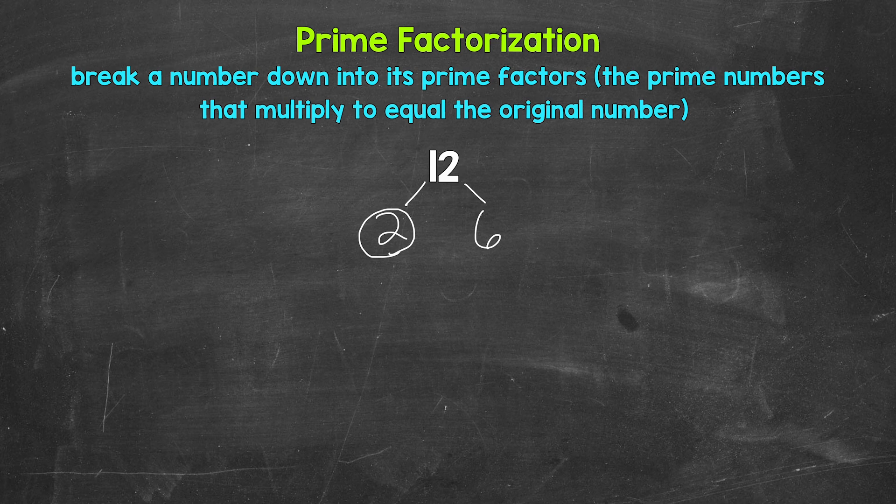So we need to think of factors here. Well, 2 and 3 are factors of 6. 2 times 3 equals 6. So let's break 6 down into 2 and 3.